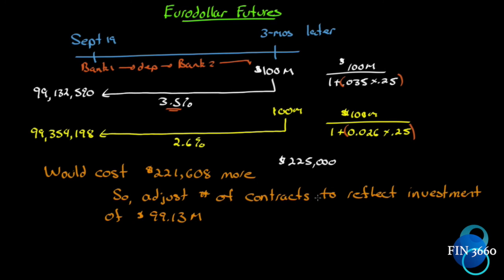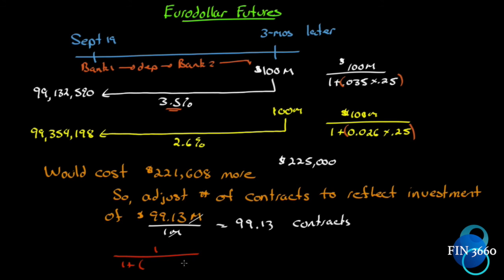So we adjust the number of contracts to reflect the investment of $99.13 million. If we're going to put in $99.13 million and each contract is for one million, that would be 99.13 contracts — the millions cancel out. What if it wasn't $100 million? What if it was $75 million, $62 million, or $23 million? We don't want to redo this calculation each time. All we do is take one divided by one plus the interest rate we're trying to lock in times 0.25: one divided by (1 + 0.035 × 0.25) = 0.991325. That's the adjustment factor we multiply the number of contracts by.